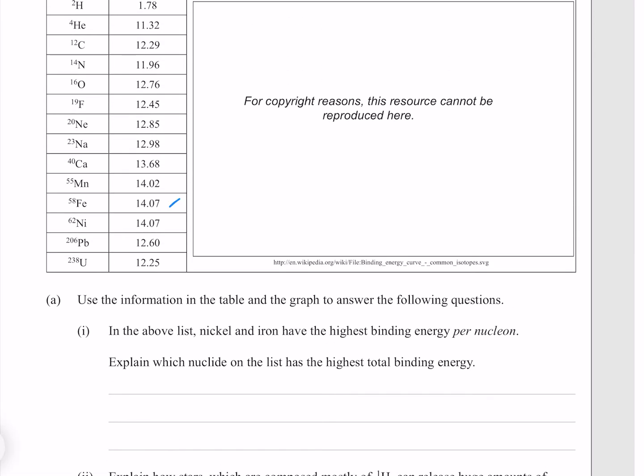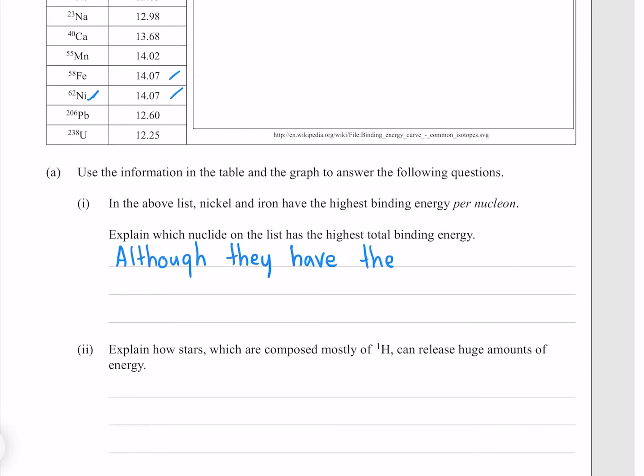We see that iron and nickel have the same binding energy per nucleon, but because nickel has more nucleons, with 62 as opposed to 58, it's going to have the higher binding energy. Although they have the same binding energy per nucleon, nickel has more nucleons, so it has a larger total binding energy.